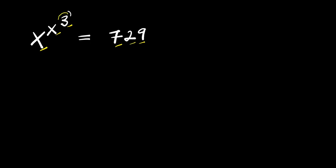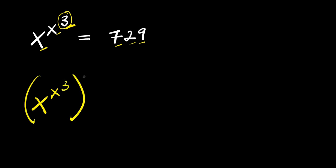We have 3 here, and you need to consider that. Because of this, we are going to raise each part of this equation to the power of 3. So what we are going to have will be x to the power of x to the power of 3, raised to the power of 3 again, and this equals 7 to 9, which is also raised to the power of 3.